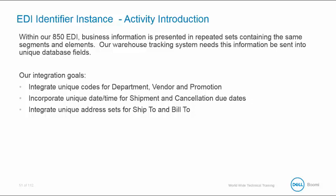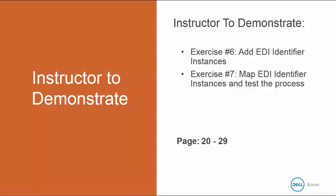So how do we do this without leveraging a custom script? Well, the answer of course is the EDI identifier instance. Incorporate the unique date and time for our shipment and cancellation due dates. And finally, as I demonstrated with our N1 example, integrate a unique address for the ship to and the build to information. I'm going to demonstrate exercise number six to add the EDI identifier instances and exercise number seven to map the EDI identifier instances and test the process.